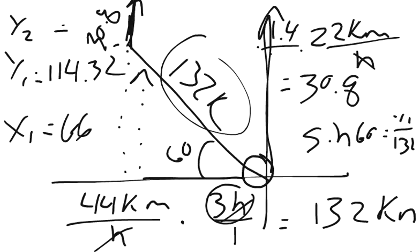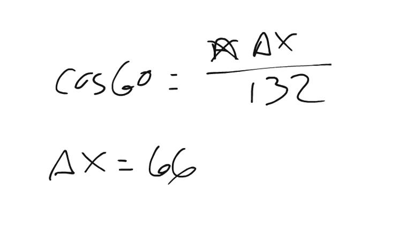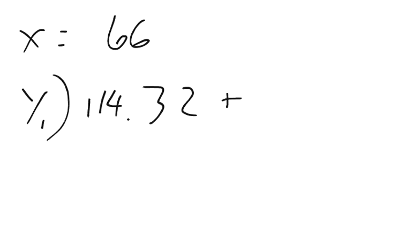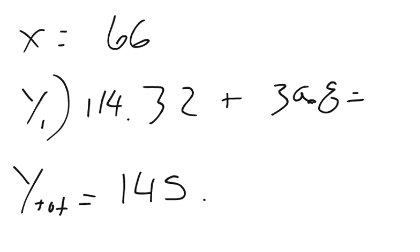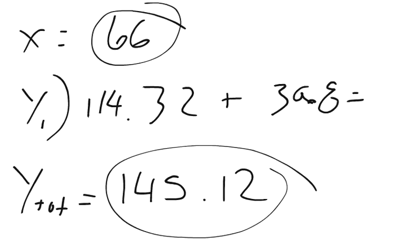Now we can add our x's and add our y's to find our resultant vector. My x's, I only have one, it's 66. My y1 was 114.32, my y2 is 30.8. So my total y is 145.12. So I got 66 and 145.12.